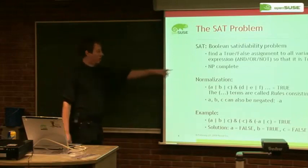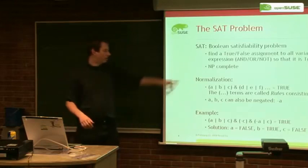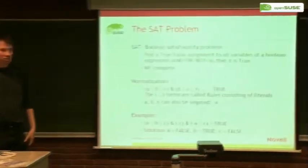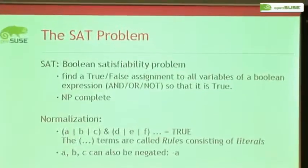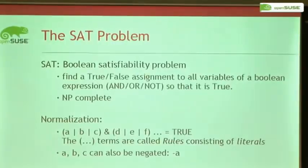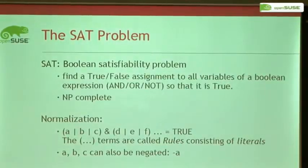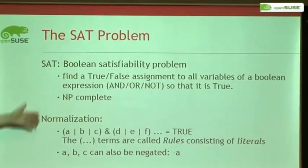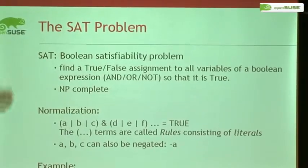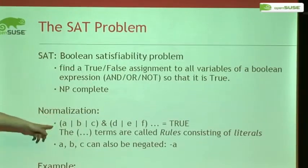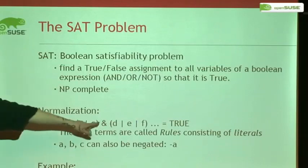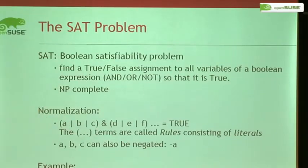This is actually an NP-complete problem — it's a hard problem. When the expression is complex it's NP-complete, so what you normally do with such problems is some sort of search with backtracking. An easy preprocessing step is normalization: you take the big expression and normalize it so that it has a conjunctive normal form — terms connected with OR, and all terms connected with AND — and of course you can have negations in there.